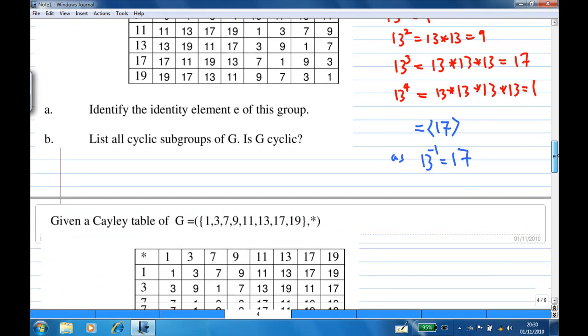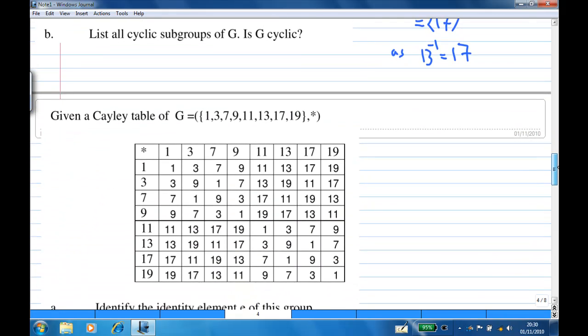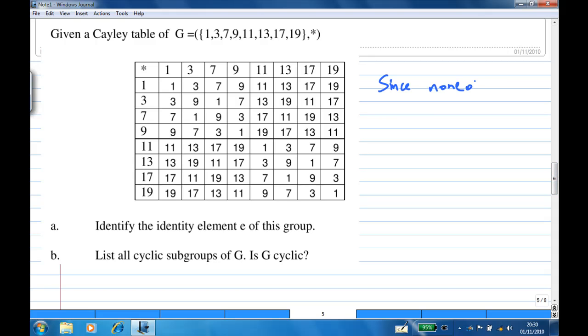Now, we have found all the cyclic subgroups already. Since none of the cyclic subgroups generated is G, and none of the cyclic subgroups has 8 elements, G is not cyclic.